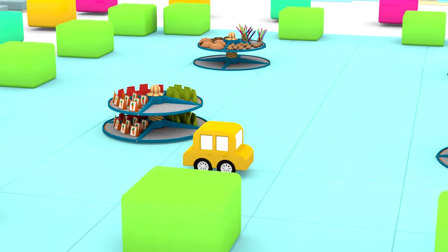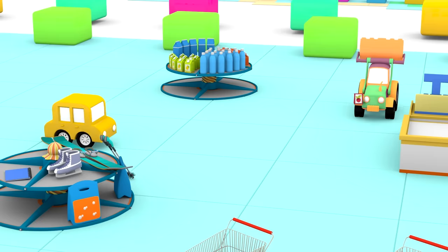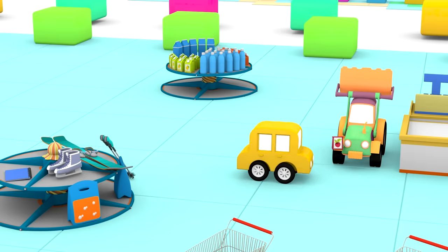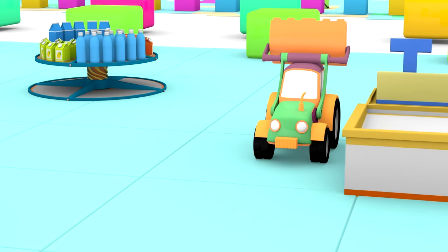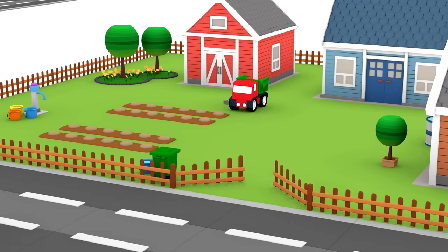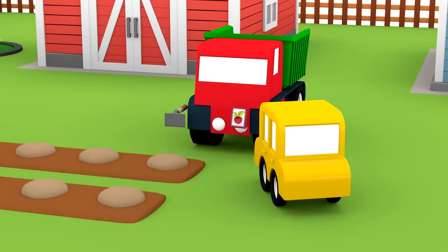The yellow car has arrived at the shop. He and the tractor are buying some radish seeds. The little car has taken them to the vegetable patch to plant them.